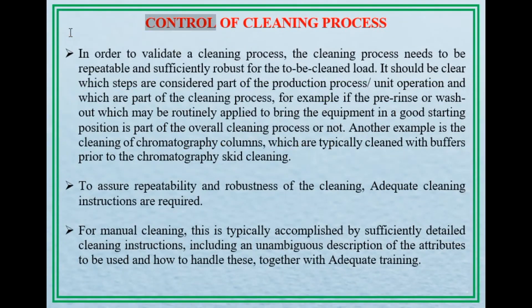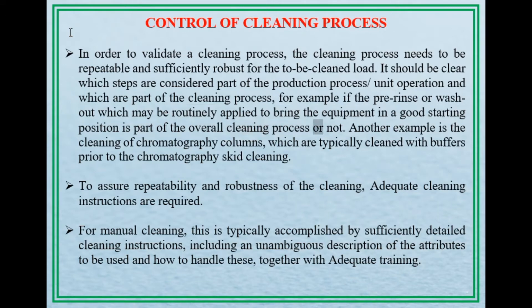Part five of eight: Control of Cleaning Process. In order to validate a cleaning process, the cleaning process needs to be repeatable and sufficiently robust for the load to be cleaned. It should be clear which steps are part of the production process or unit operation and which are part of the cleaning process. For example, whether a pre-rinse or washout — routinely applied to bring equipment to a good starting position — is part of the overall cleaning process. Another example is the cleaning of chromatography columns, which are typically cleaned with buffers prior to the chromatography skid cleaning. To assure repeatability and robustness of the cleaning, adequate cleaning instructions are required.